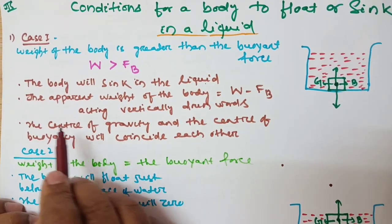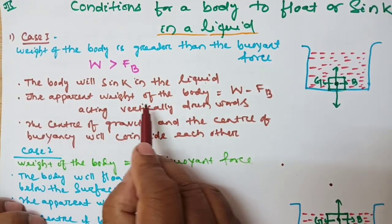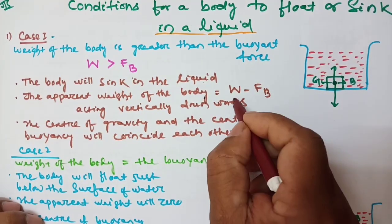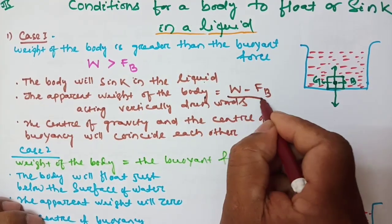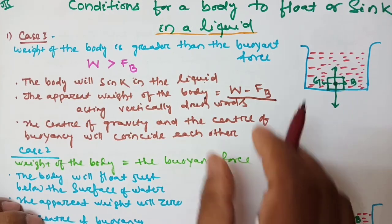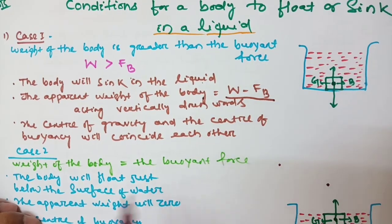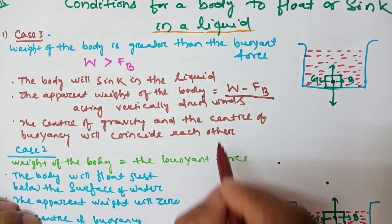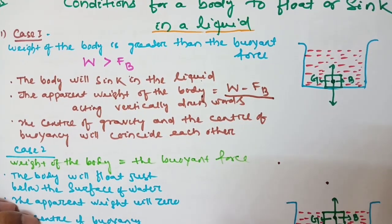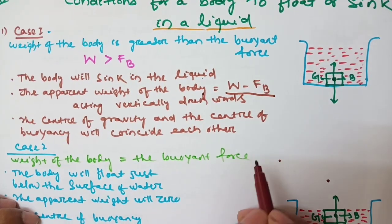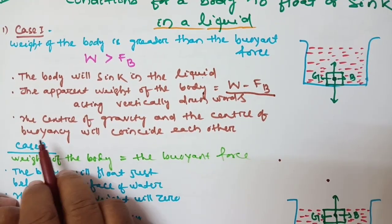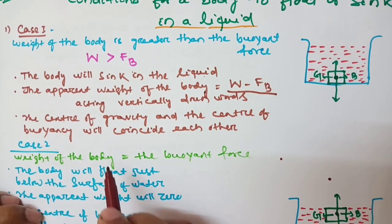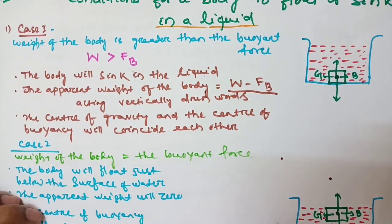Second point: the apparent weight of the body is W minus the buoyant force — the difference is the apparent weight of the body inside the liquid, acting vertically downwards. Third point: the center of gravity and the center of buoyancy will coincide with each other.